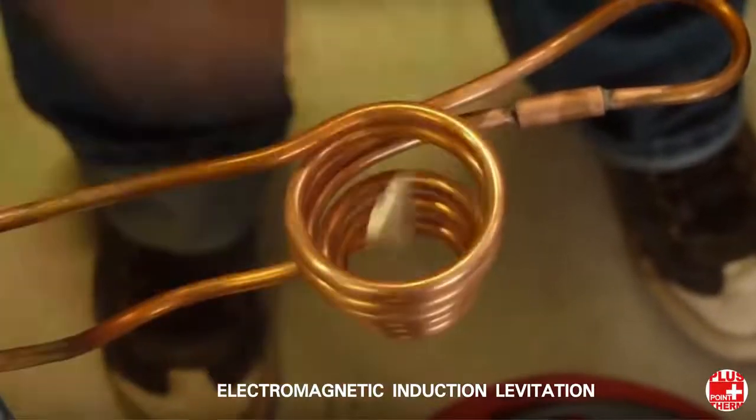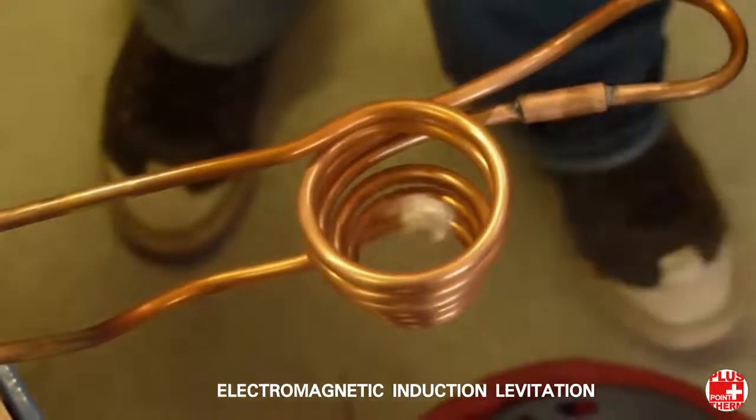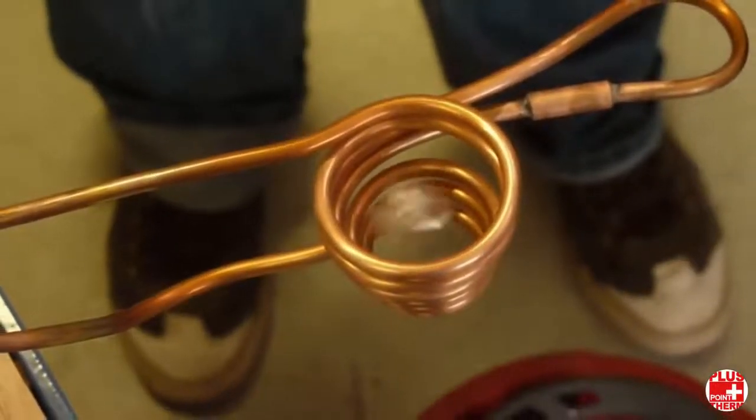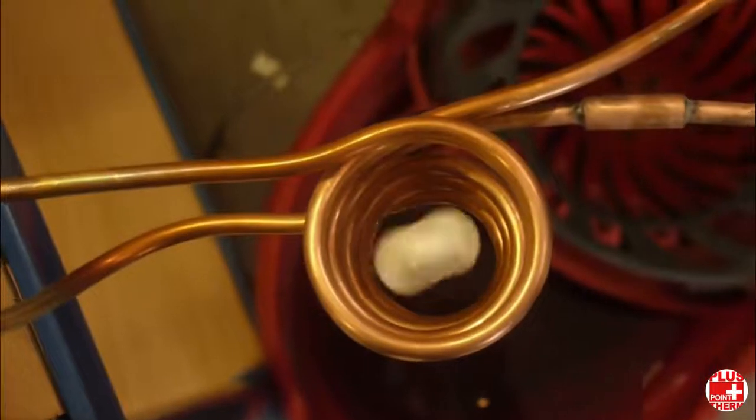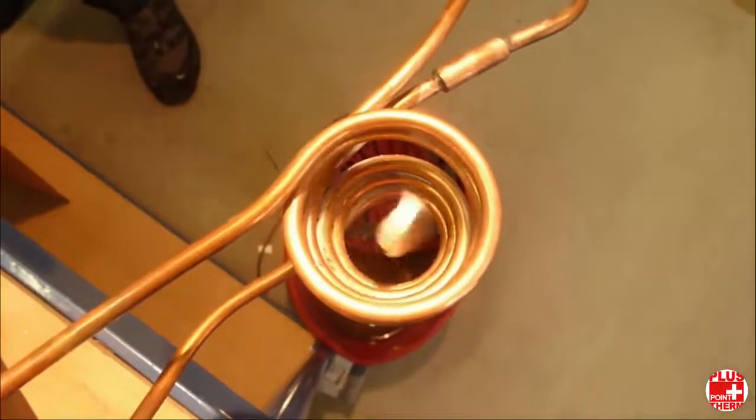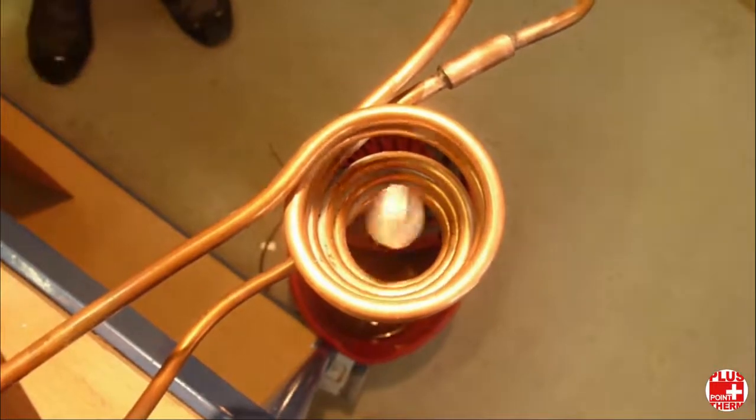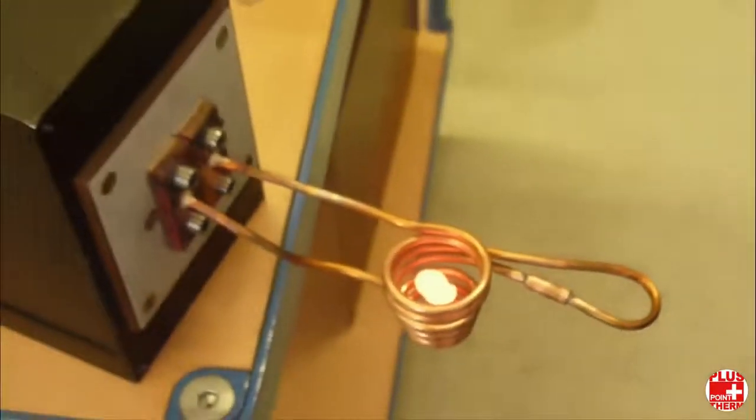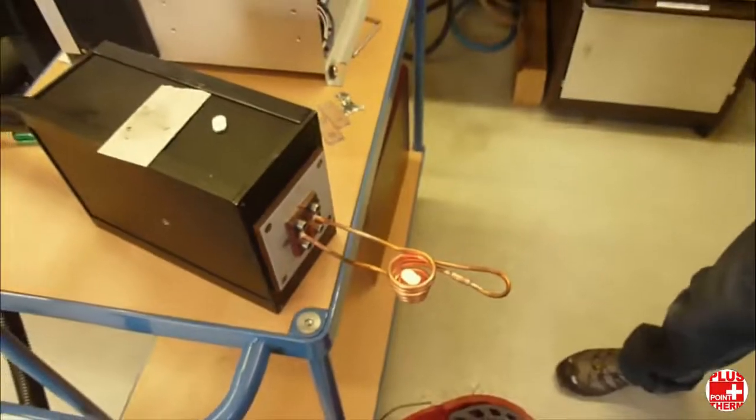Using a levitation coil, a conductive object can be levitated in a magnetic field. Depending on the metal and power setting, you can even boil metals in mid-air. Aluminum will levitate and melt easily at 1 to 1.5 kilowatt of input power.